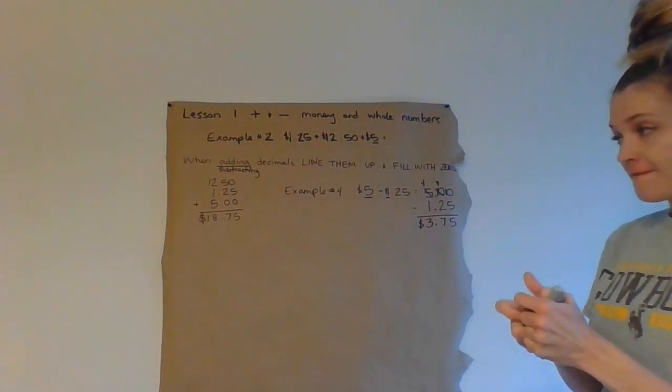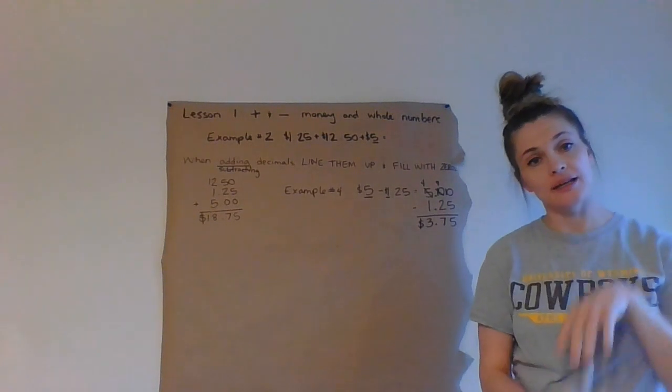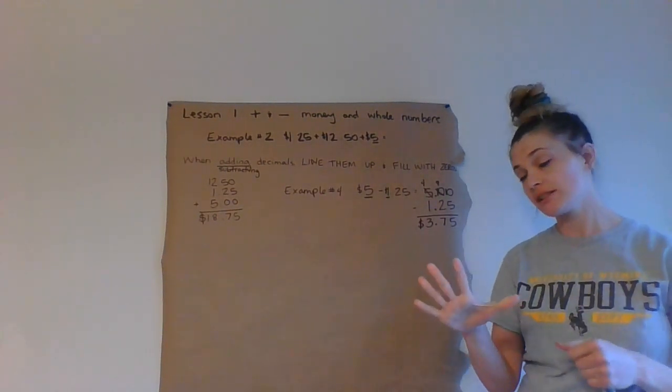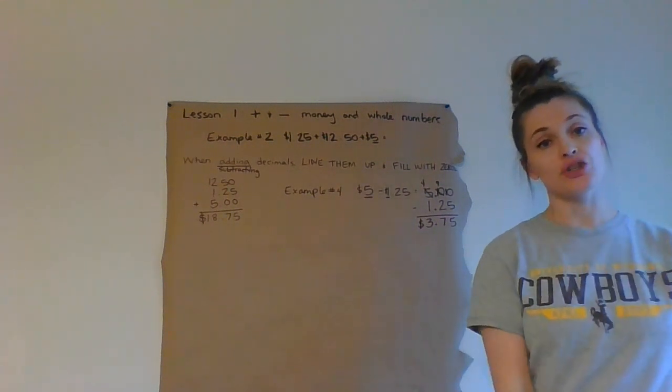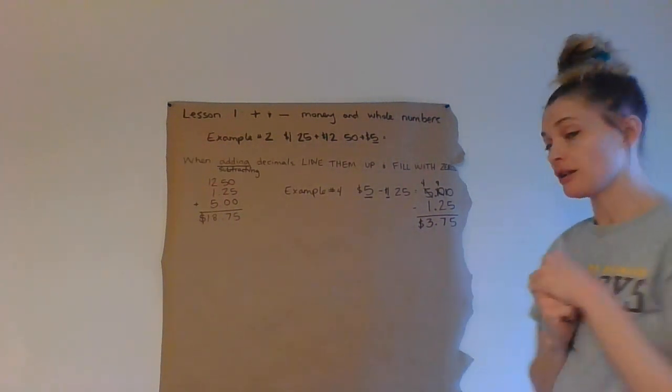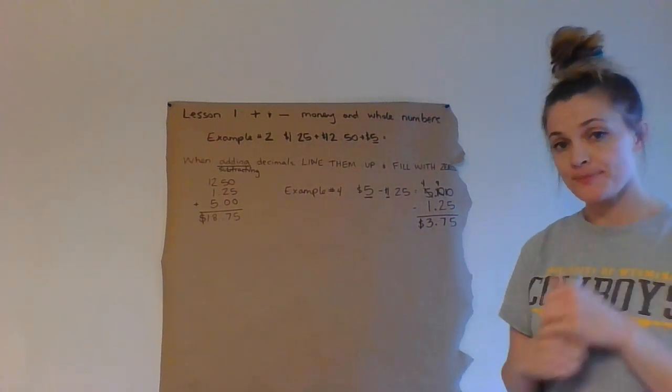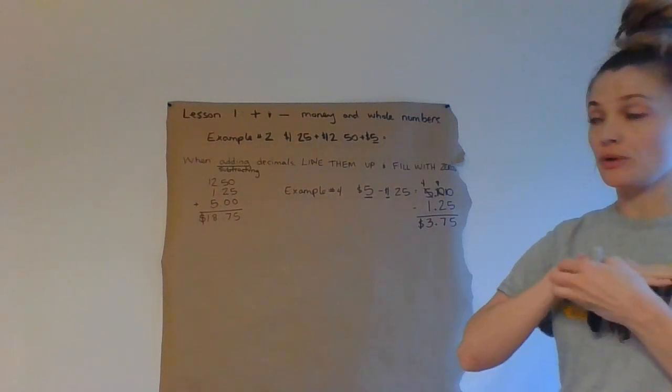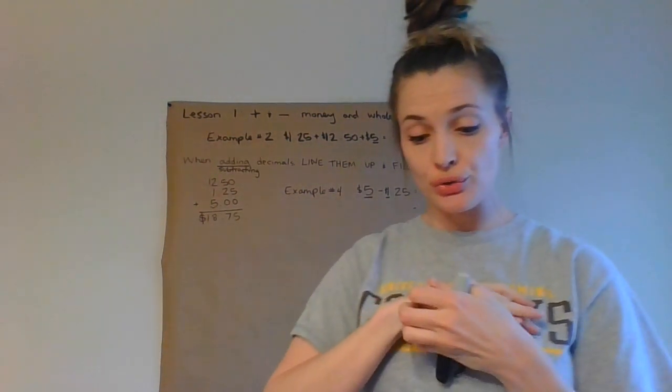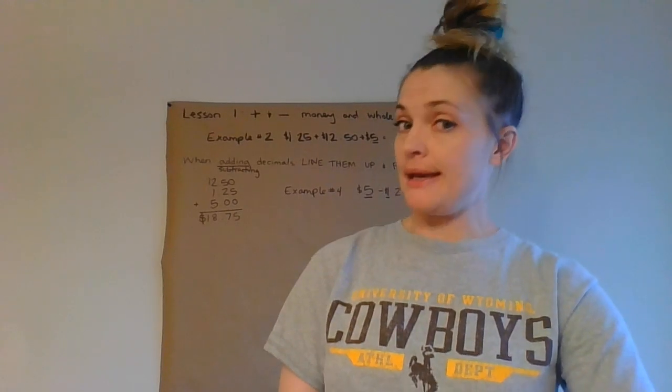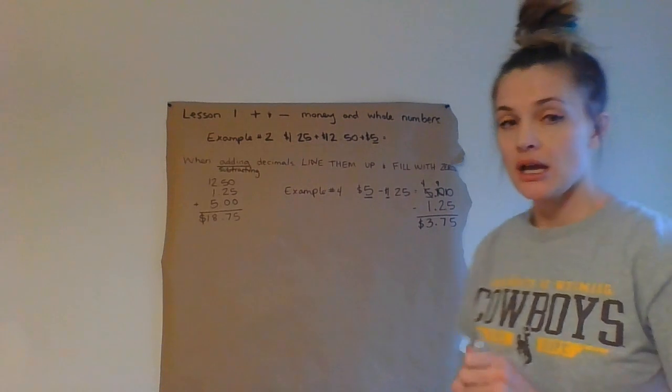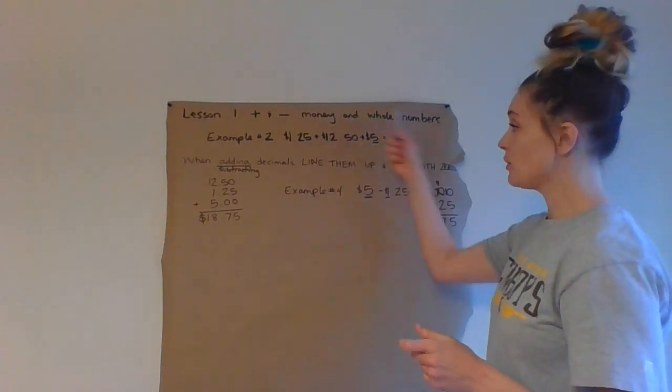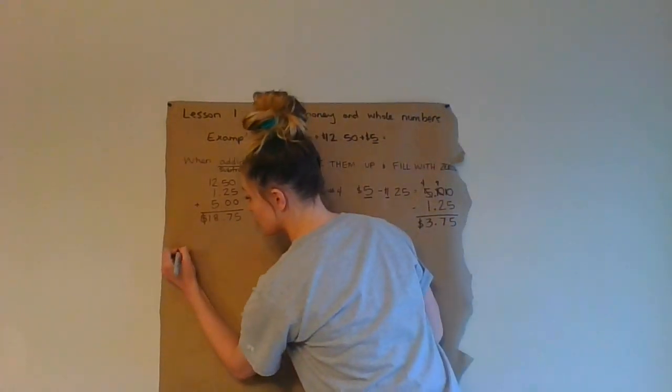So, if I am buying a hamburger and it is, I have five dollars and I spend one dollar and twenty-five cents, I should get back three dollars and seventy-five cents. That's for lesson number one. Lesson number two, multiplying and dividing money and whole numbers. I'm going to draw a line here so that we know now we're on lesson number two.